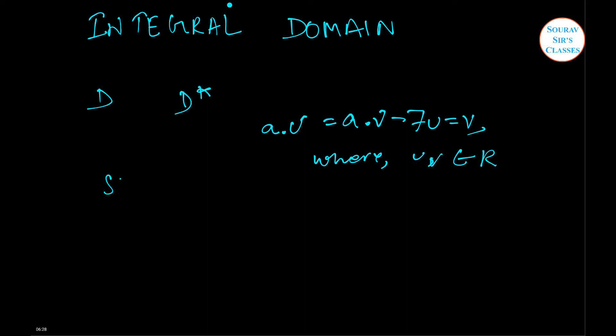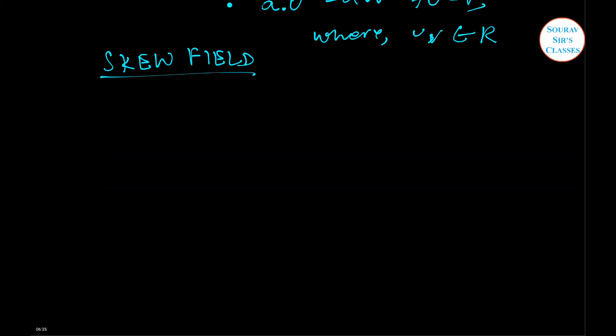Next, we are going to come across the term known as skew field. A non-trivial ring R with unity is said to be a skew field or a division ring if every non-zero element of R is a unit. It should be remembered that a skew field contains no divisor of zero.